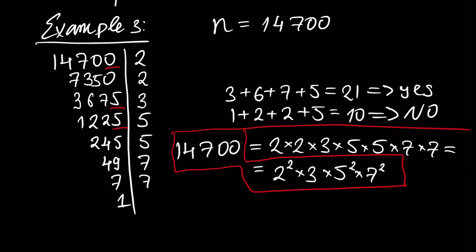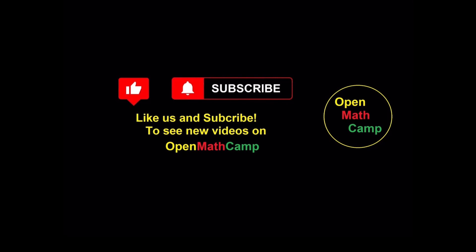So now we can implement our algorithm and write the representation of any composite number as a multiplication of prime numbers. That was everything I wanted to talk about for this tutorial. Thank you very much for your time — like us and subscribe to see new videos on OpenMathCamp.